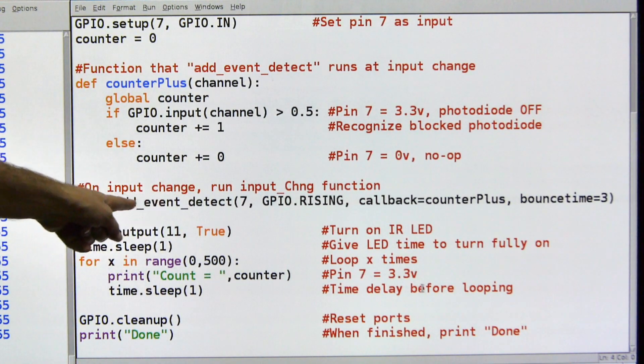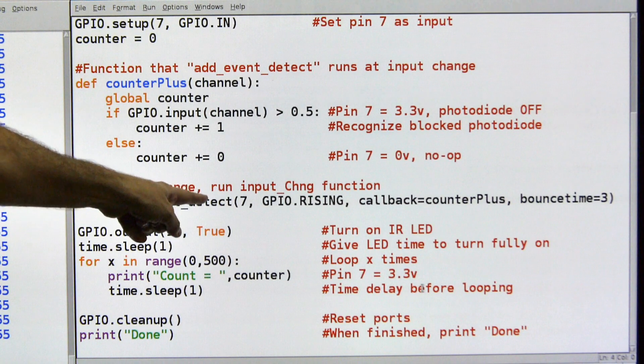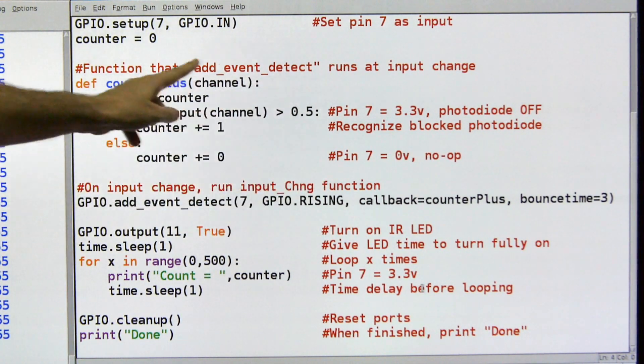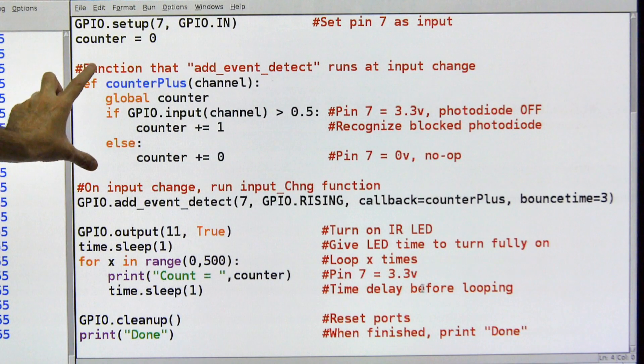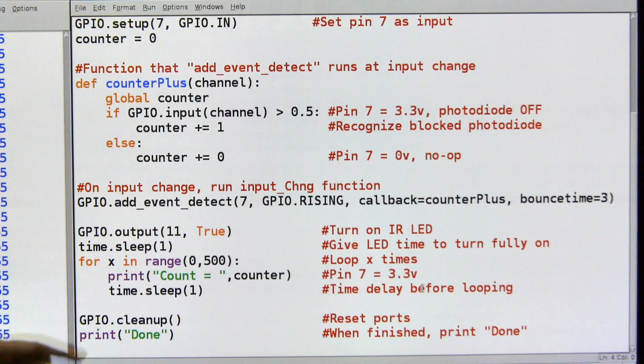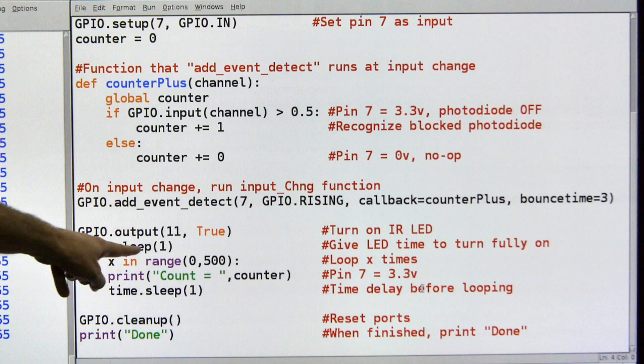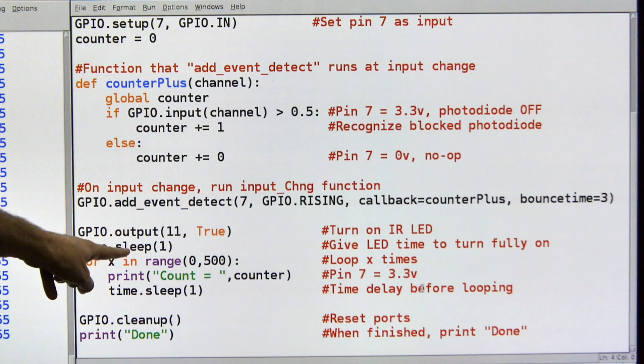Here's my GPIO add event detect, this is my interrupt. Pin seven over here, GPIO rising, callback is counter plus, so whenever there's an interrupt, it's going to execute this piece of code. And bounce time is not very important without hardware. This is electronic switching, so it's not so important, so I just set it to three. GPIO output 11 is true, I'm going to turn on the IR LED. I'm going to go to sleep for a second and make sure that the LED comes on to full power so that I don't get a false hit.